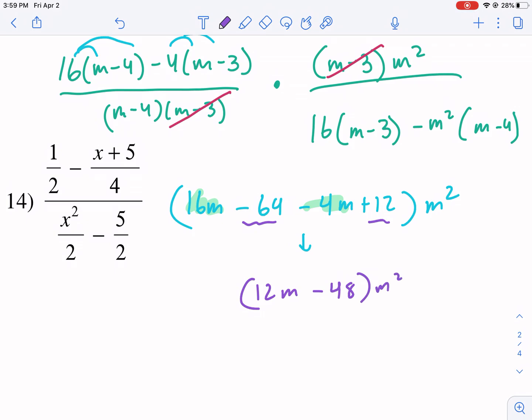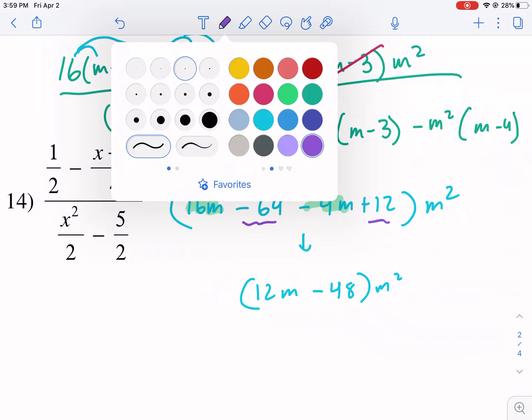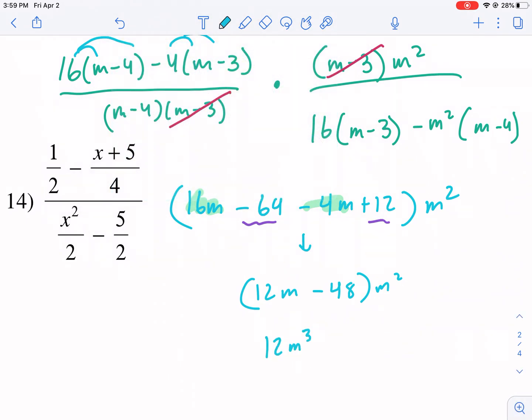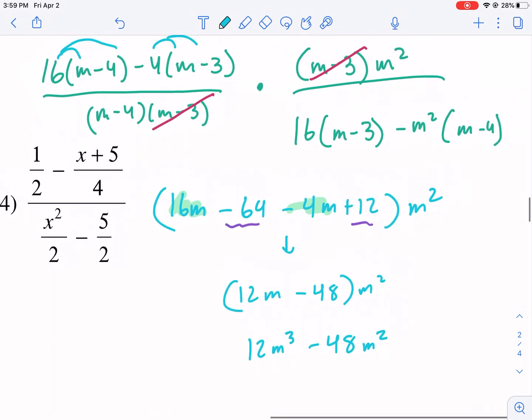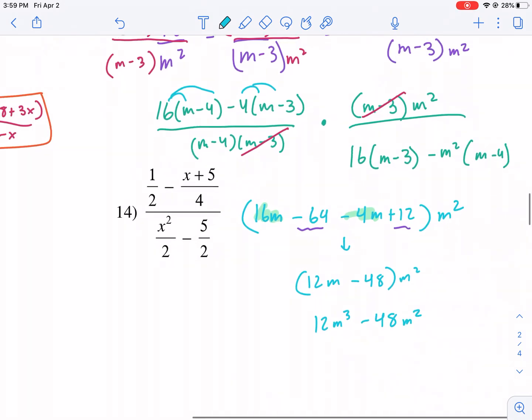I still need to multiply by m squared though, so I'm going to multiply m squared to both of these. Okay, so then I multiply m squared to both, and I get 12m cubed minus 48m squared. That's going to be my new numerator. So I simplified the numerator.